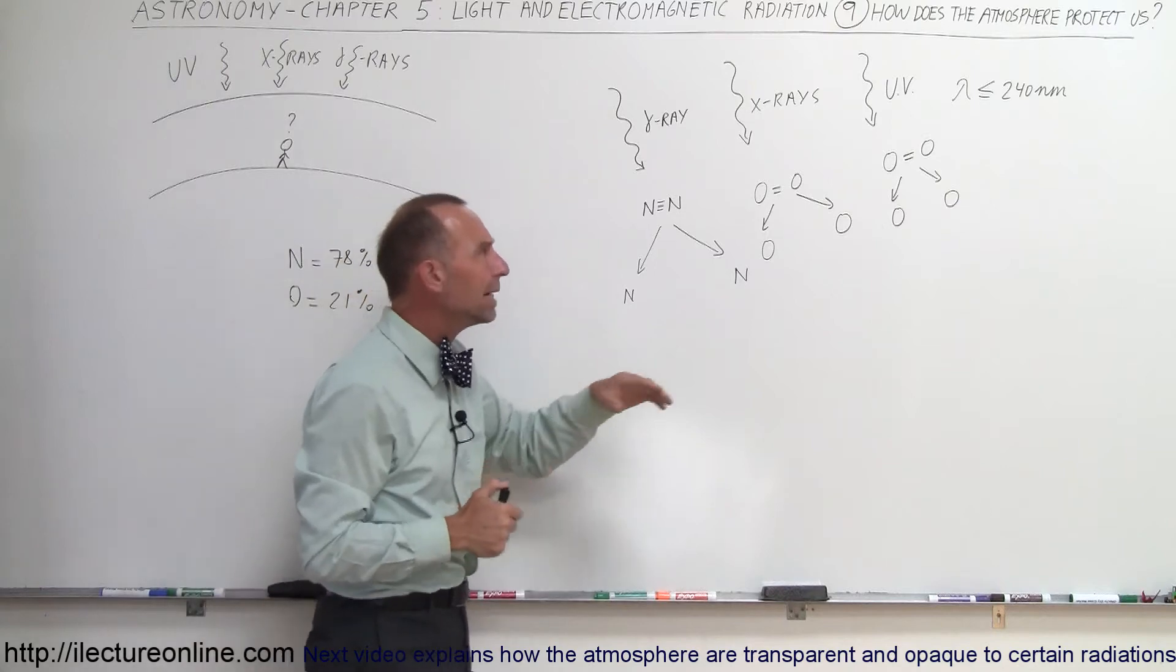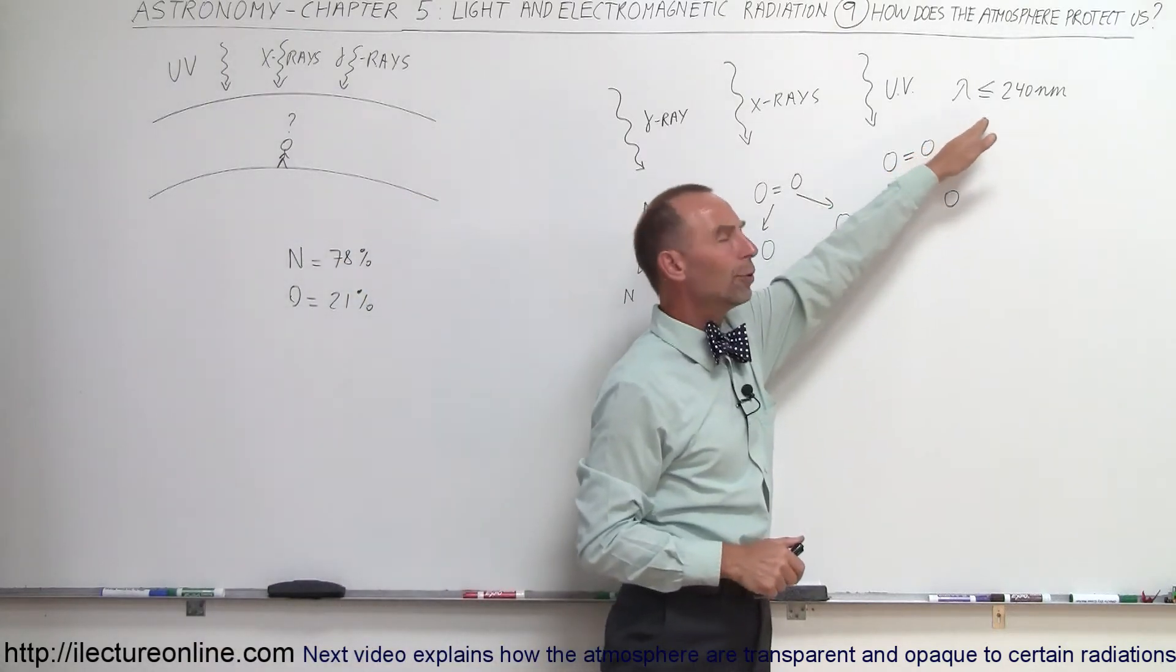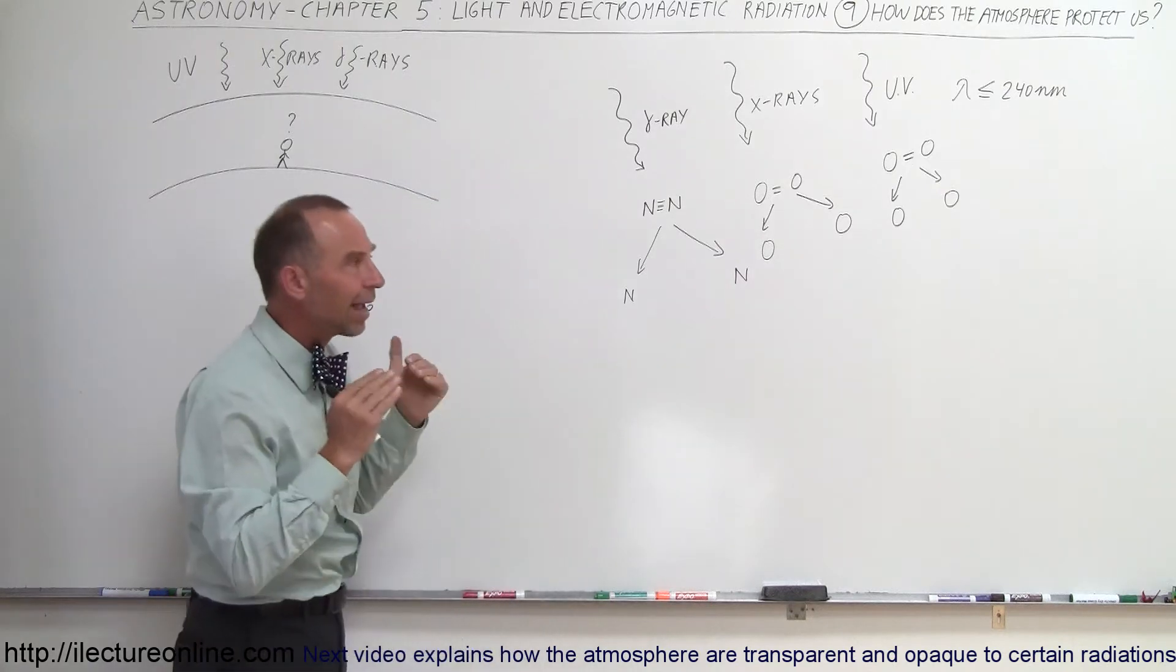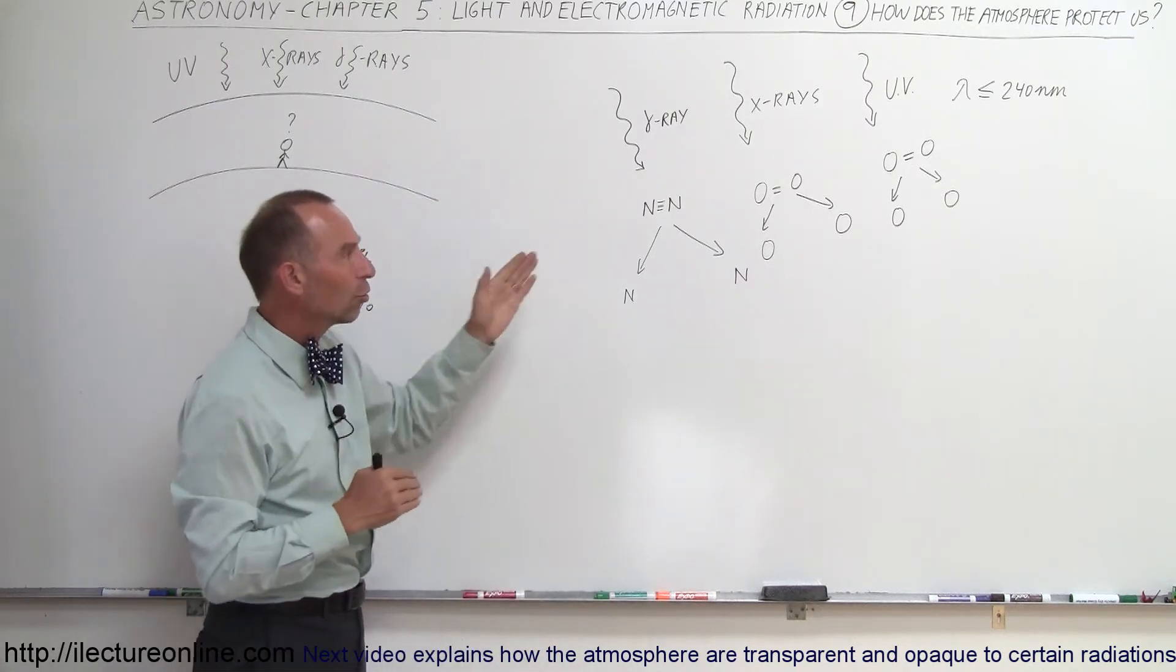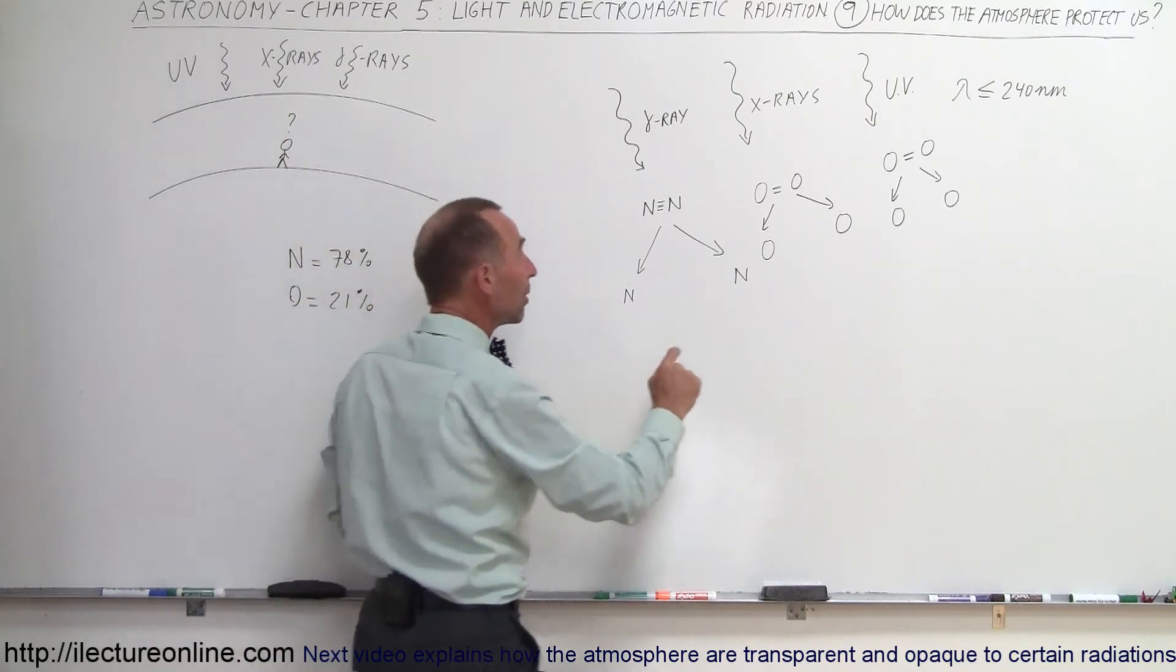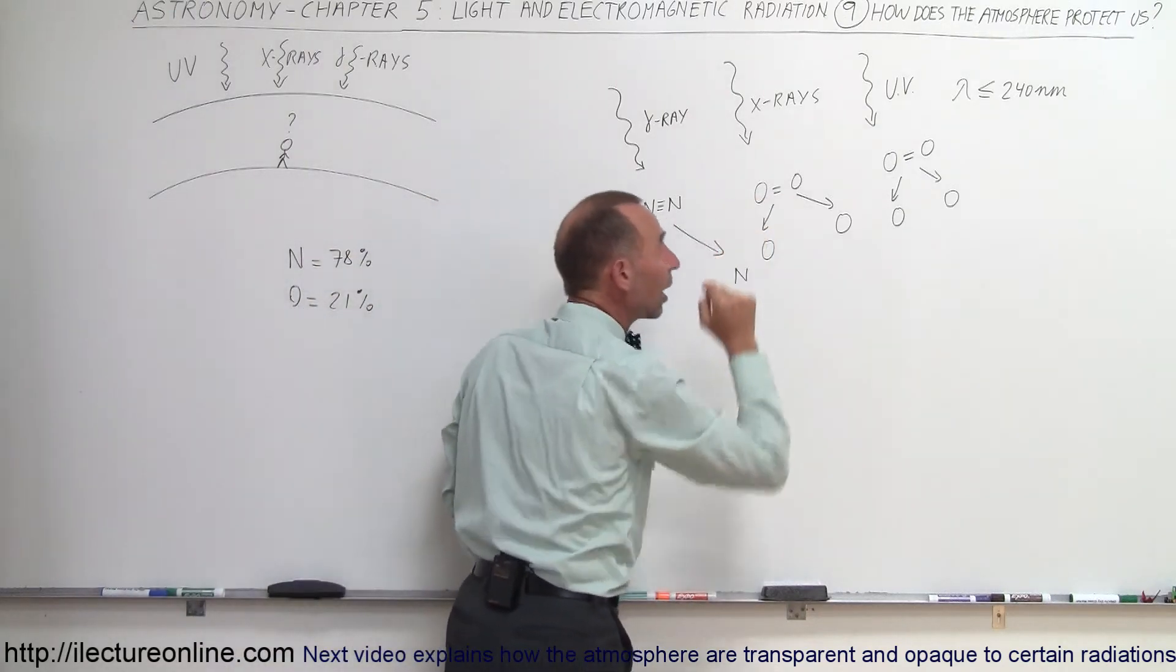But what about the UV radiation that's between 240 nanometers and visible light starting at 400 nanometers? For that type of UV radiation, those molecules cannot stop them because the energy contained within them is not enough to break up the nitrogen bonds or the oxygen bonds.